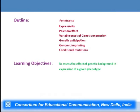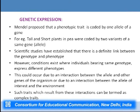The learning objective is to assess the effect of genetic background in expression of a given phenotype. Mendel proposed that a phenotypic trait is coded by one allele of a gene — one allele will give rise to a particular phenotype while the other gives rise to another, with dominant and recessive relationships between alleles. For example, tall and short pea plants were coded by two alleles of the same gene. After years of study, a definite link between genotype and phenotype has been established.